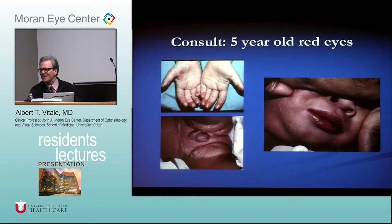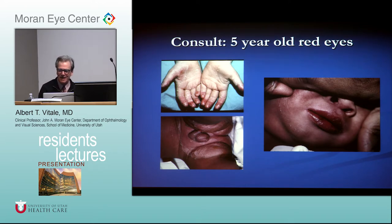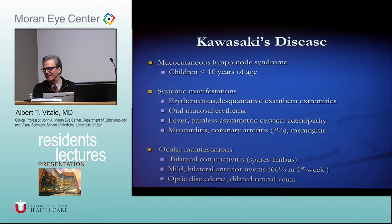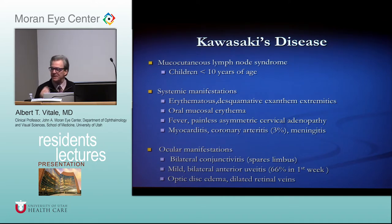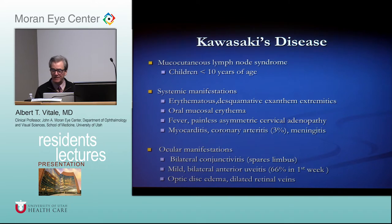A five-year-old with desquamating rash on fingertips, strawberry tongue, and erythematous lips — the diagnosis is Kawasaki's disease, also known as mucocutaneous lymph node syndrome. It usually affects children under age 10, with erythematous rash on extremities and oral mucosa, fever, and painless cervical adenopathy. Importantly, these patients can develop myocarditis and coronary arteritis. Ocularly, they get bilateral conjunctivitis sparing the limbus and sometimes anterior uveitis early in the course.